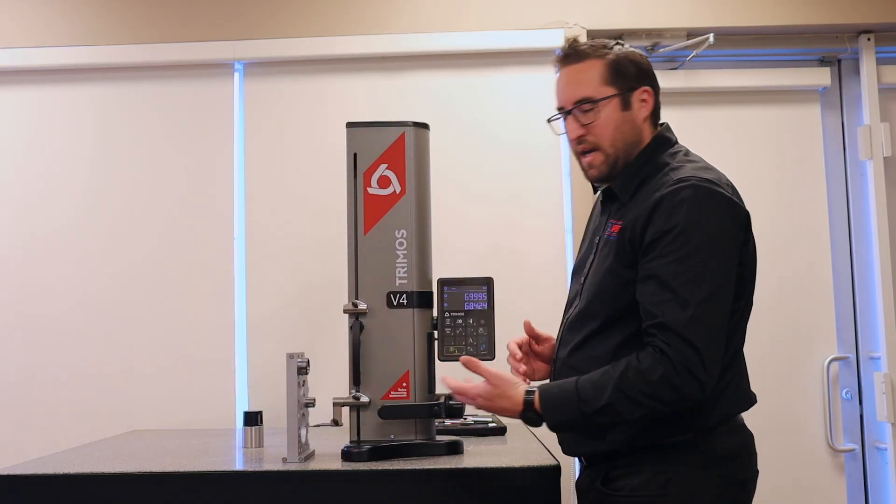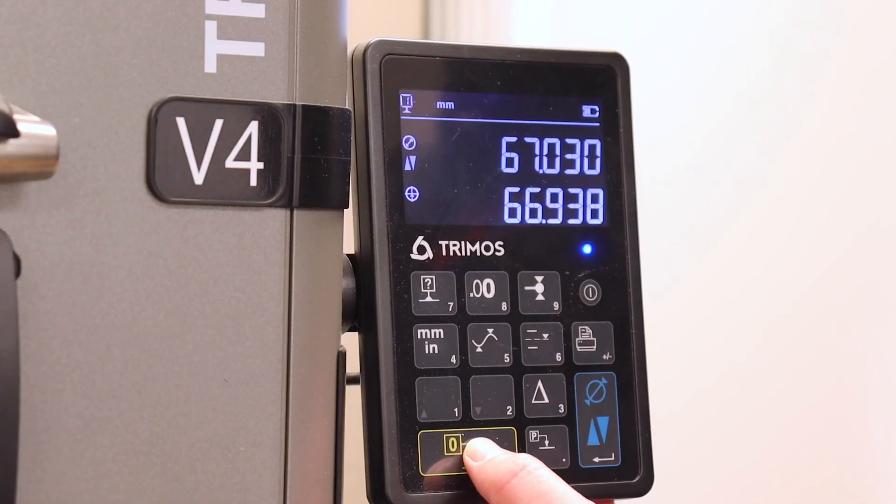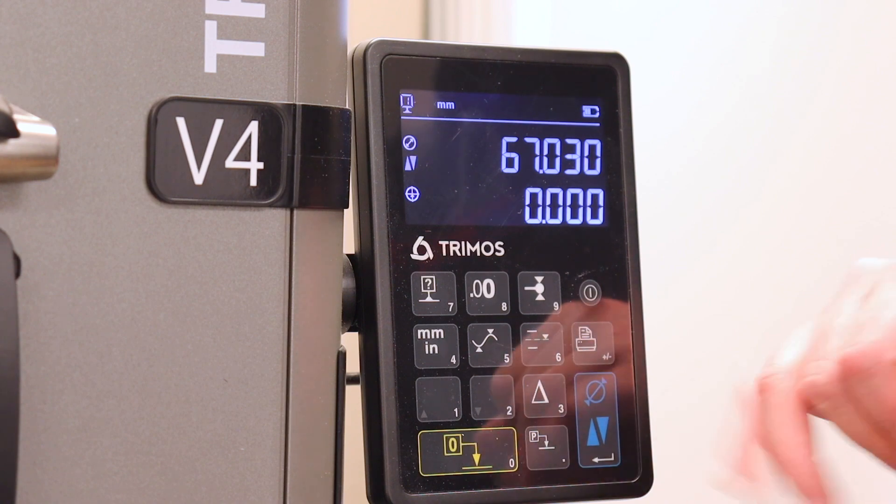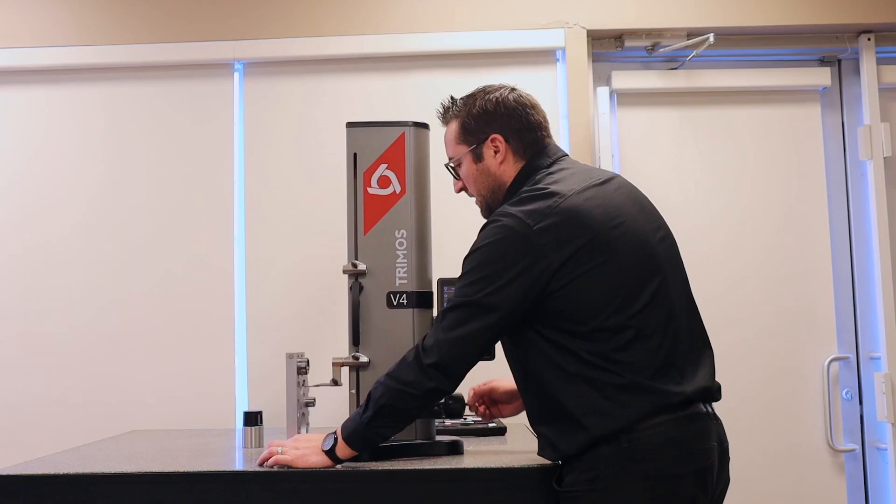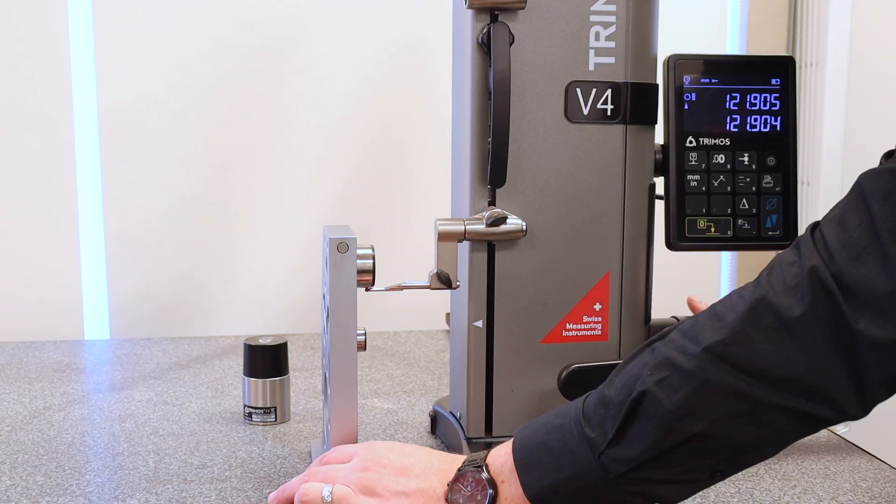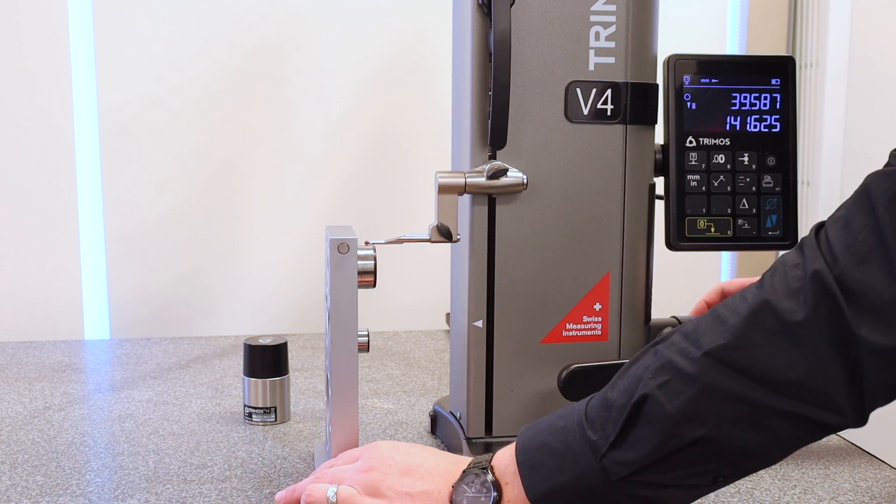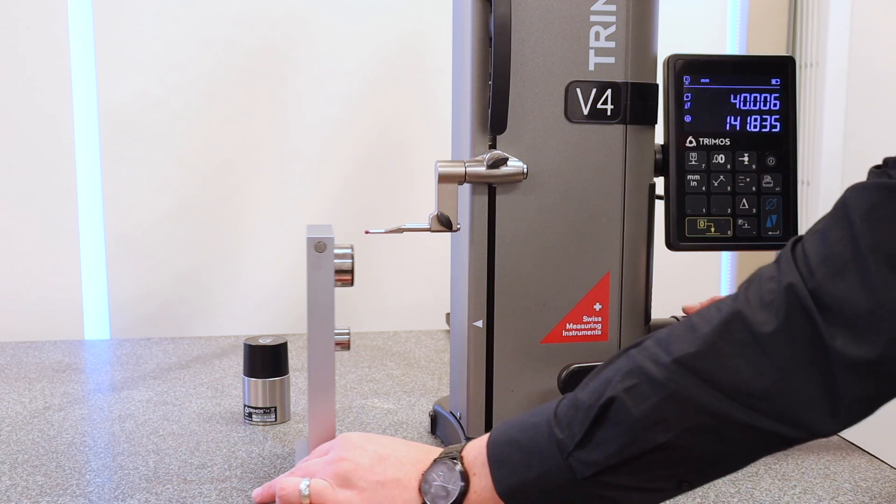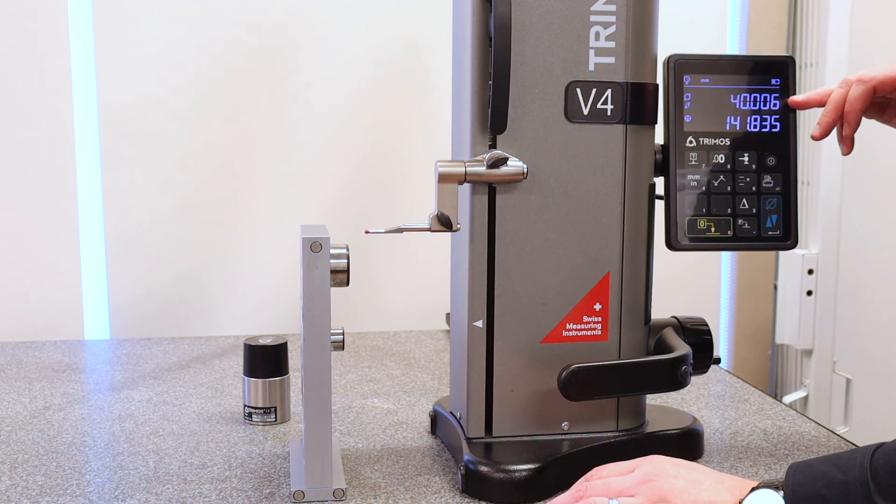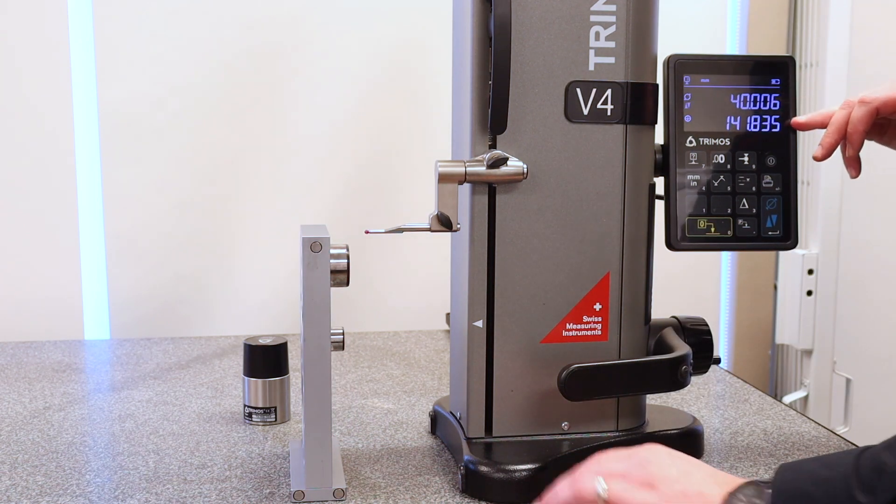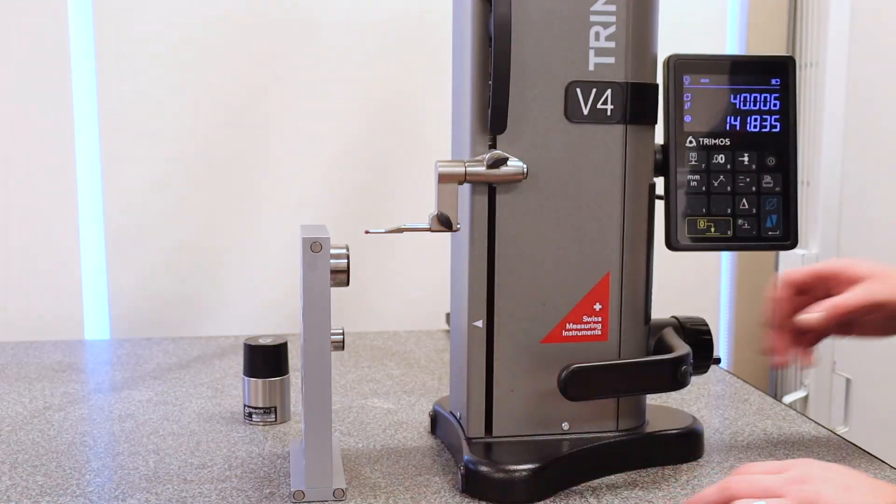Now if we want to check the pitch diameter between two bores, I can zero on that center line and then come up here to this outside diameter and probe to find the lowest point. You've heard there a beep and seen a flash. That's the smart reverse technology telling me that I found the highest point or the lowest point.